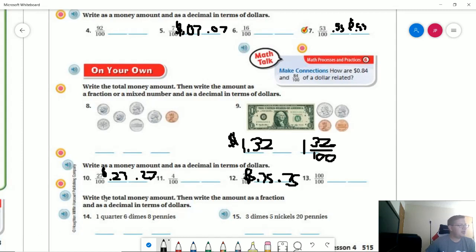Number 14, write the total money amount. So I have one quarter, which is worth 25 cents. I have six dimes that are worth a total of 0.6 or 0.60 and then eight pennies, which equal 0.08.